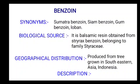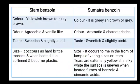Geographical distribution: produced from trees grown in southeastern Asia and Indonesia. Description: benzoin has two categories — Siam benzoin and Sumatra benzoin. Color of Siam benzoin: yellowish brown to rusty brown. Sumatra benzoin: grayish brown or gray in color. Odor of Siam benzoin: agreeable and vanilla-like. Sumatra benzoin: aromatic and characteristic.